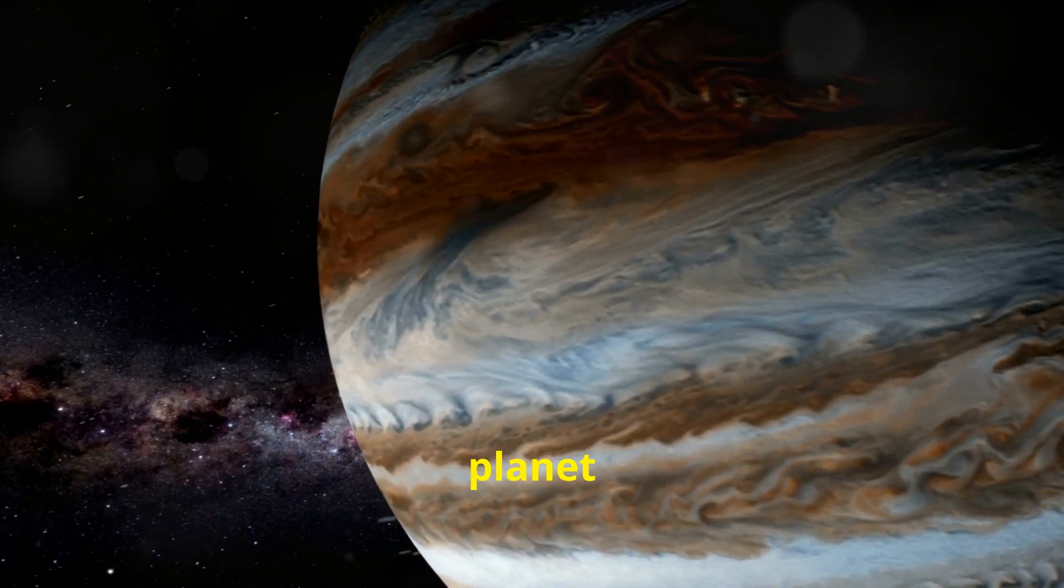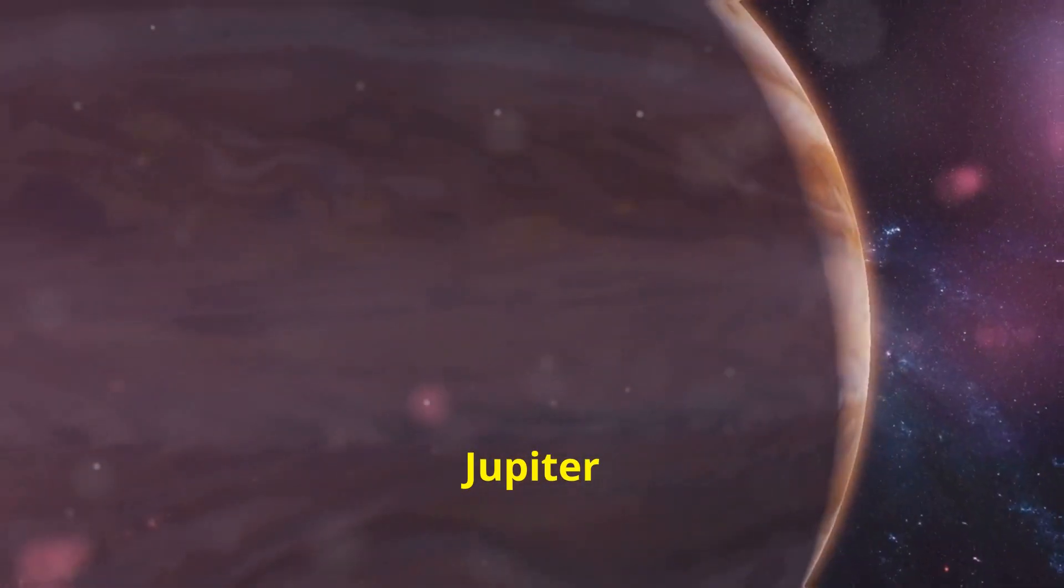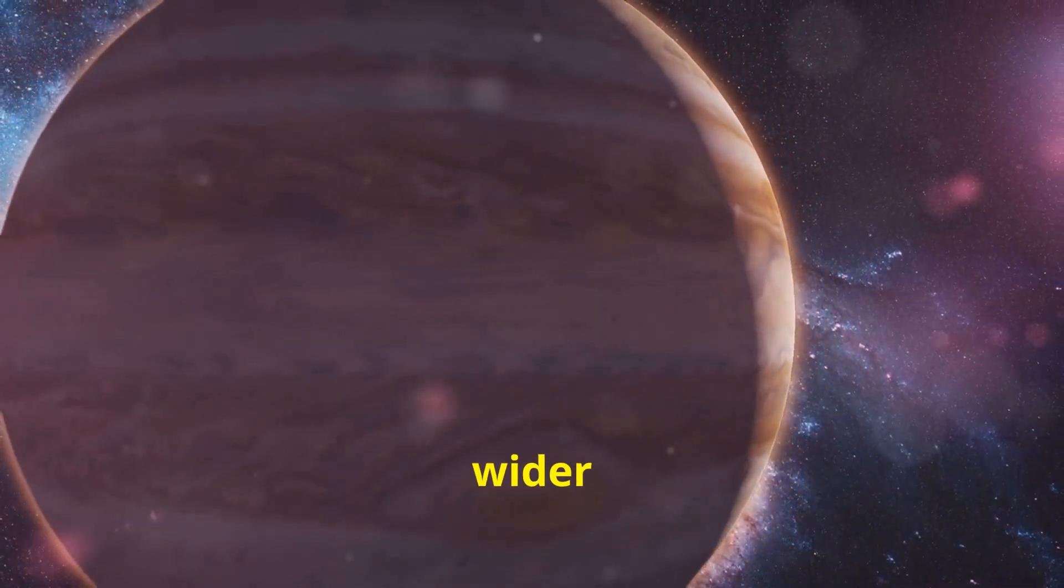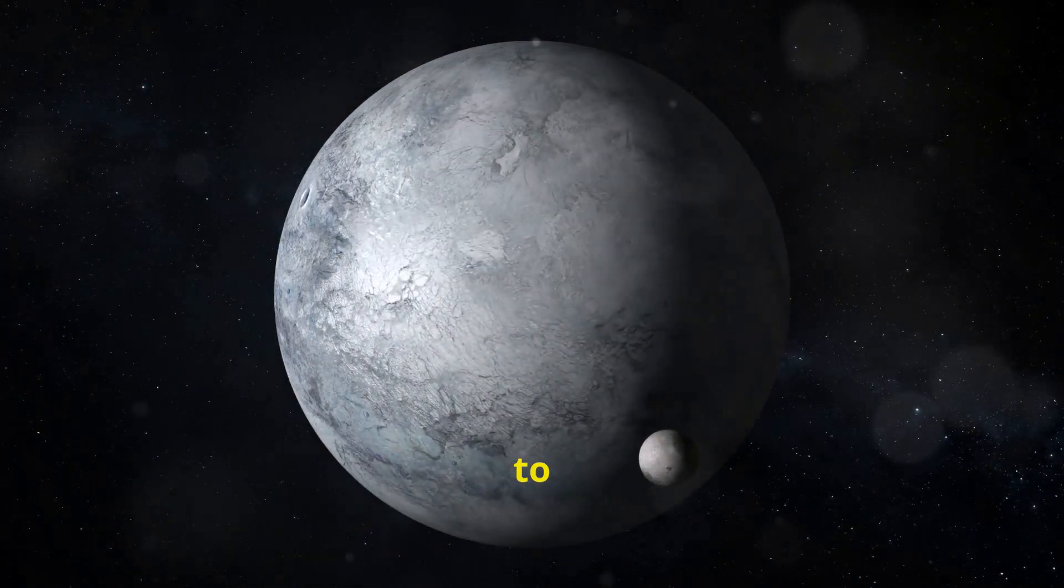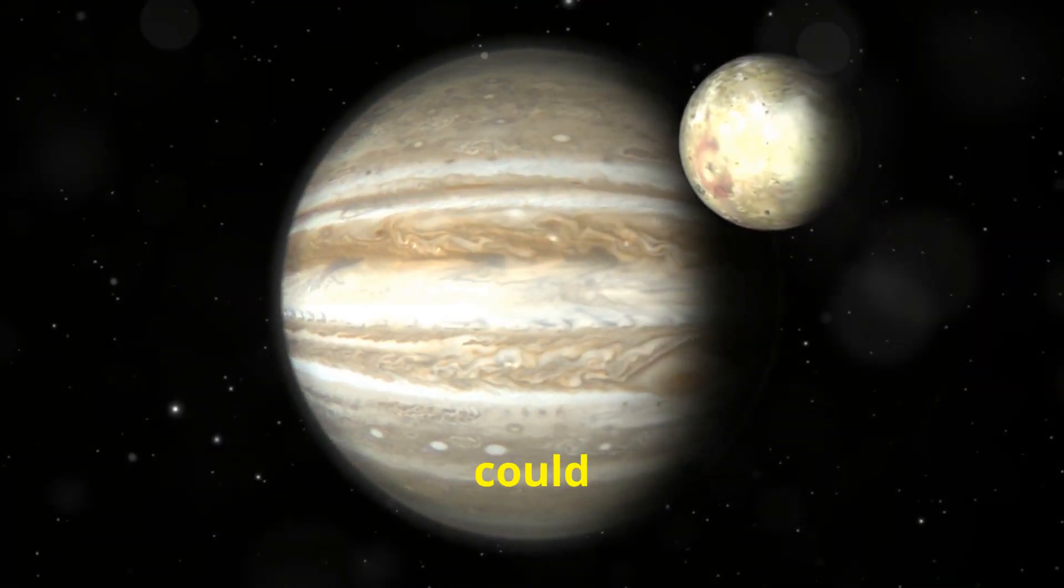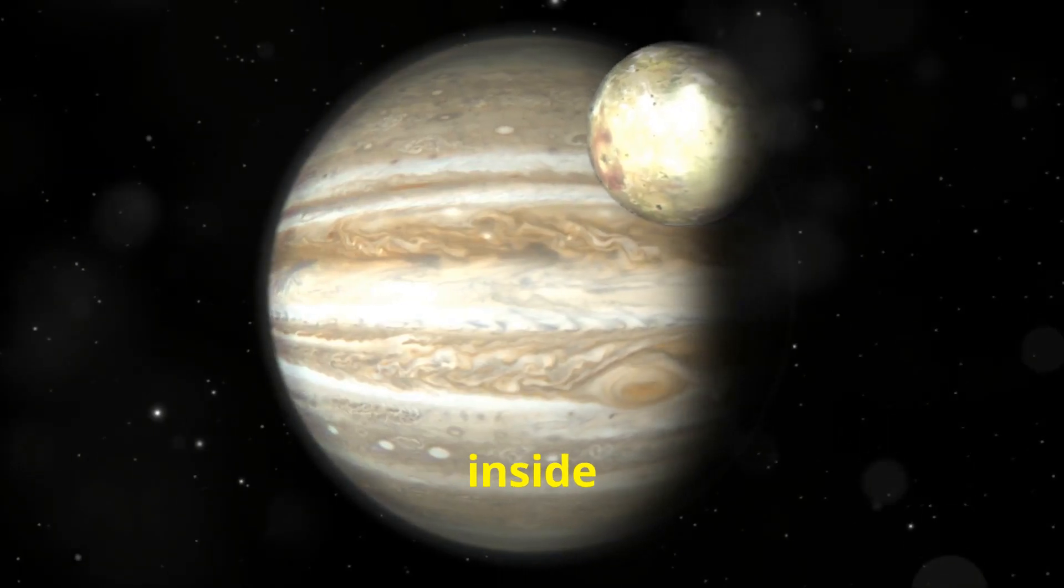Take Jupiter, a planet in our solar system. Jupiter is a gas giant eleven times wider than Earth. To put that into perspective, imagine a grape next to a basketball. In terms of volume, Jupiter could fit 1,300 Earths inside it.